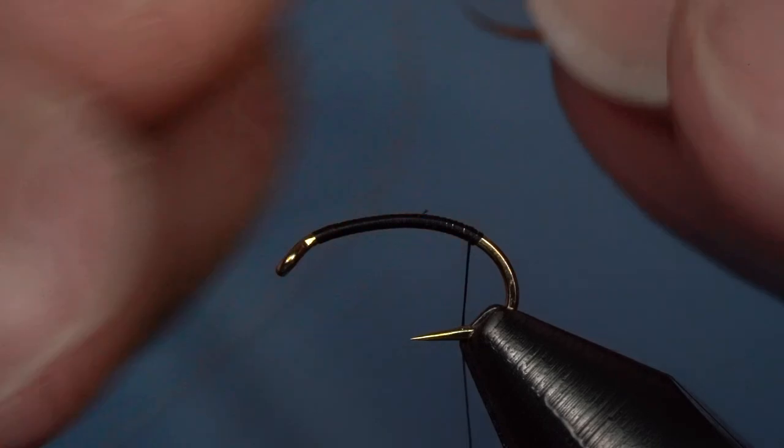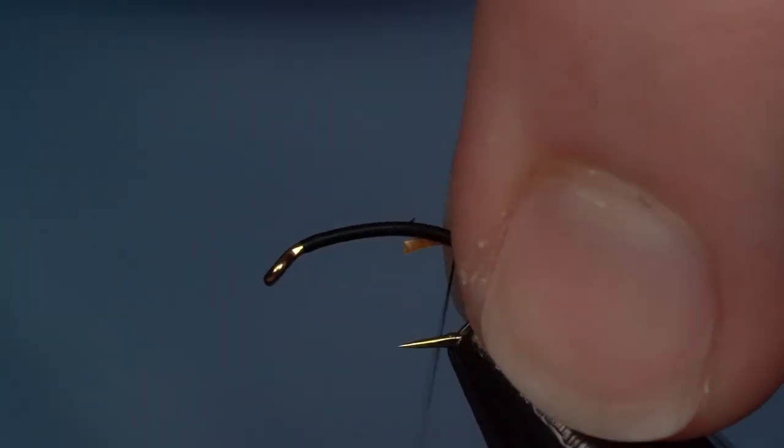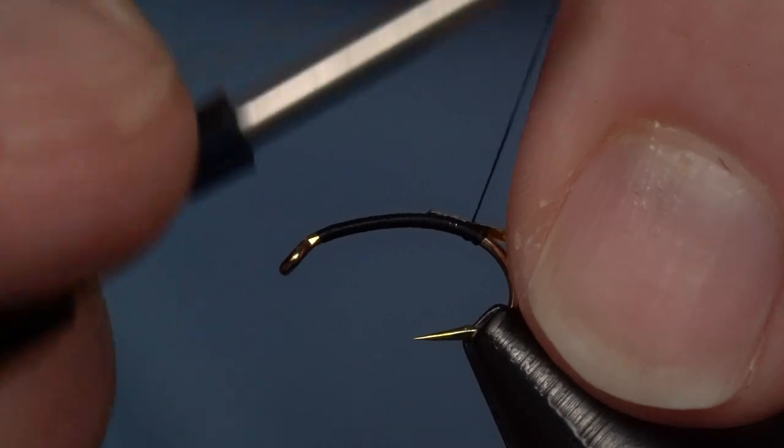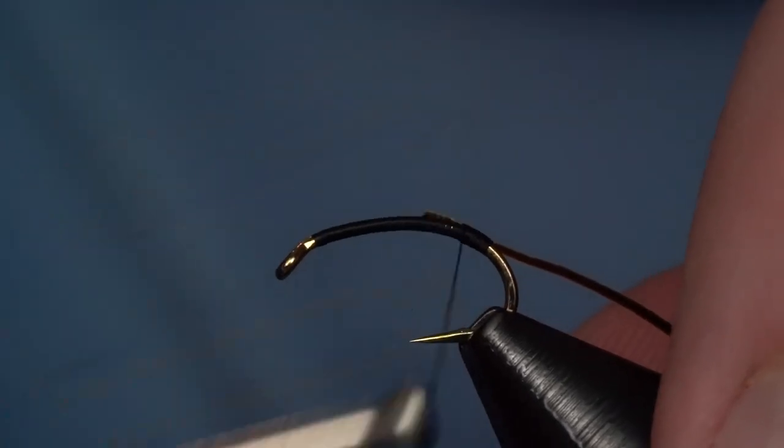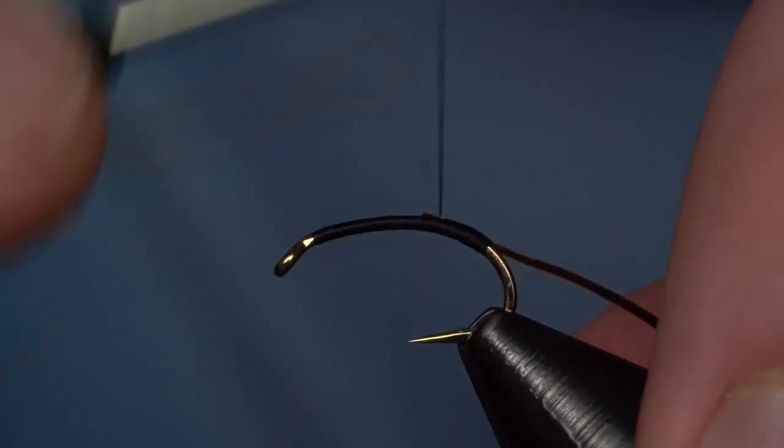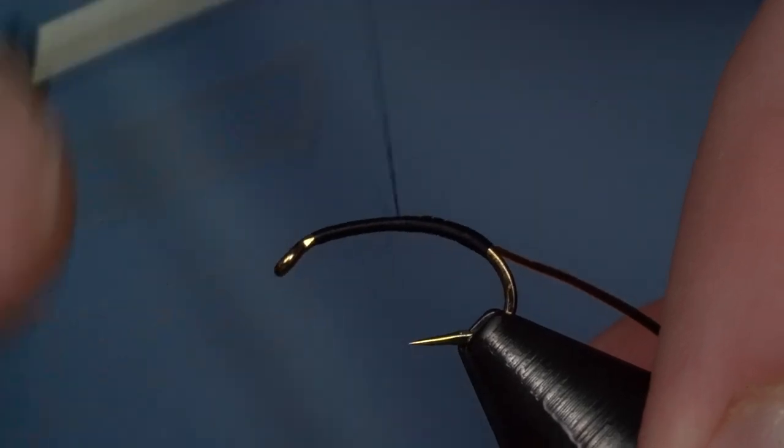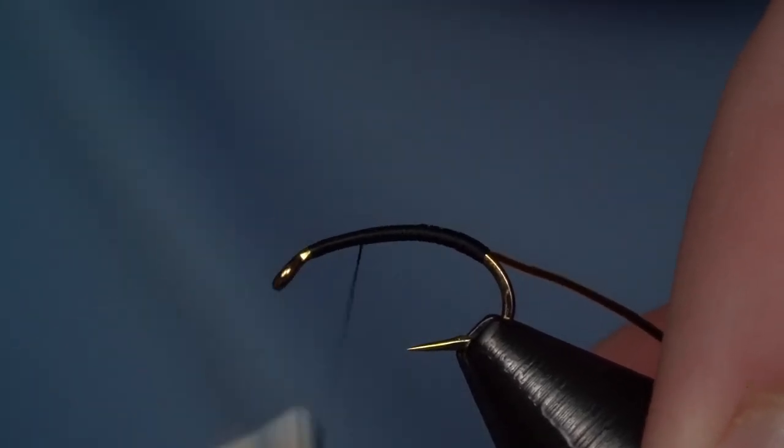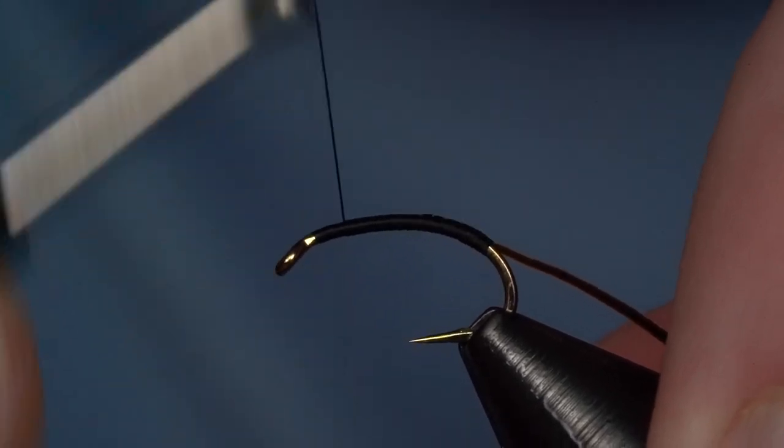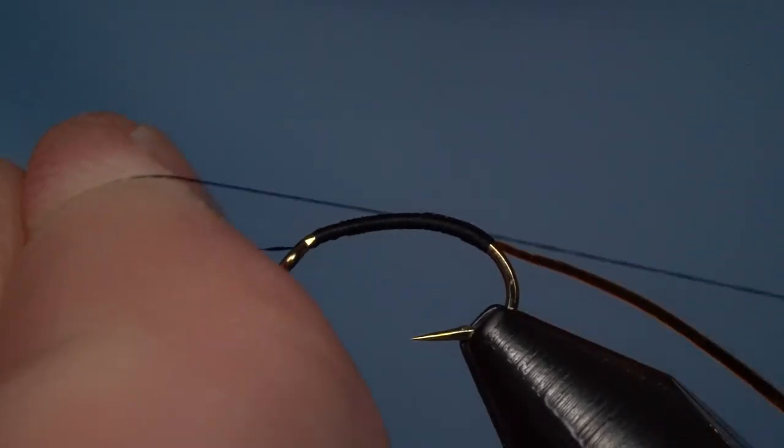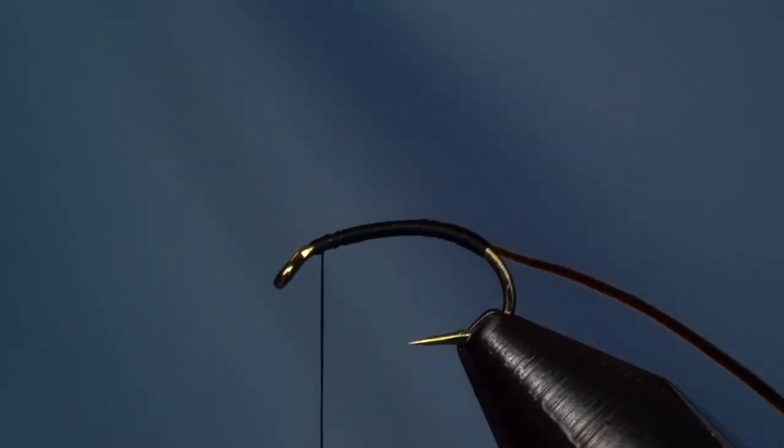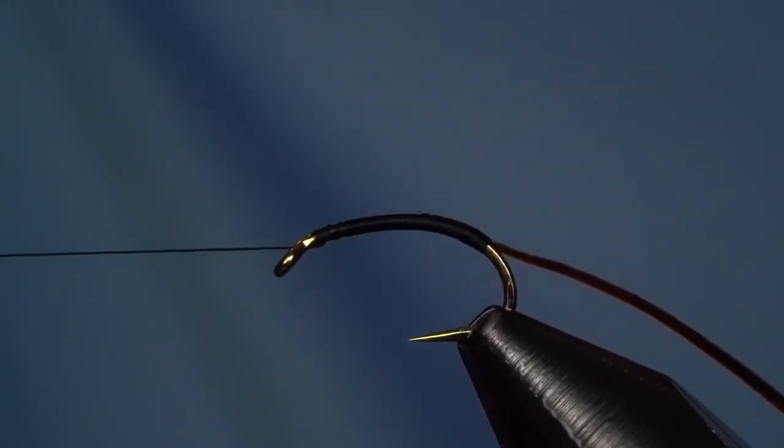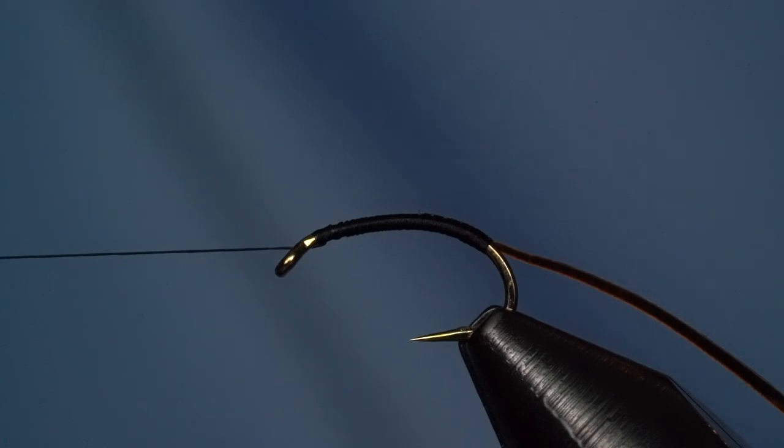We're going to tie in the narrow side first with the sticky side up. Now that we've got that secured on the hook shank, we'll walk forward with nice smooth thread wraps so we can wrap that quill down nicely. We'll stop a hook eye to two hook eyes back to leave room for the head of the fly.